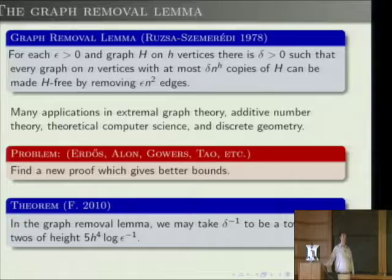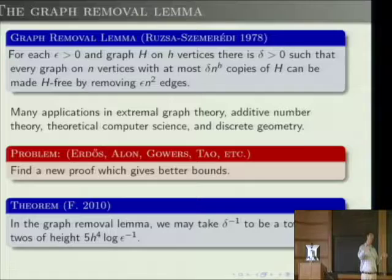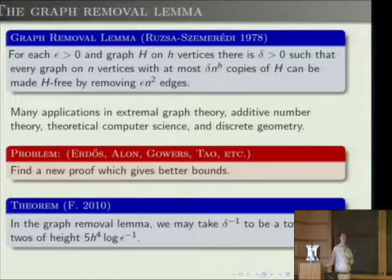For Roth's theorem, there's a construction of Behrend giving a subset of {1,...,N} of size N/e^(C√(log N))—something not quite polynomial in N but larger than any smaller polynomial. Roughly, you take a ball in high dimension and project it to still avoid three-term arithmetic progressions.